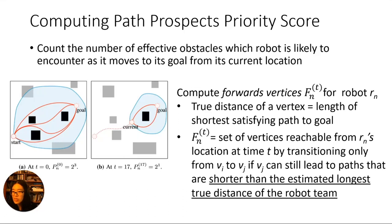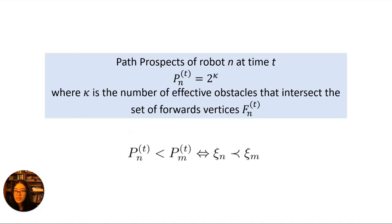We can now clearly define our path prospects heuristic. For a robot n at time t, its priority score is equal to 2 to the kappa, where kappa is the number of effective obstacles that intersect the forwards vertices, computed for robot n at time t. For this heuristic, a lower score means a higher priority.